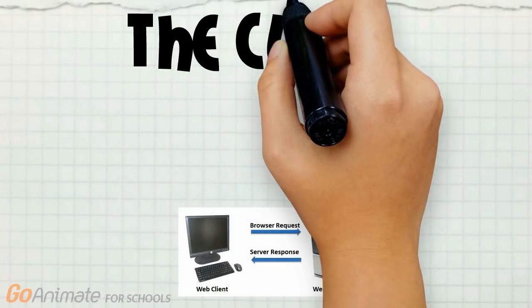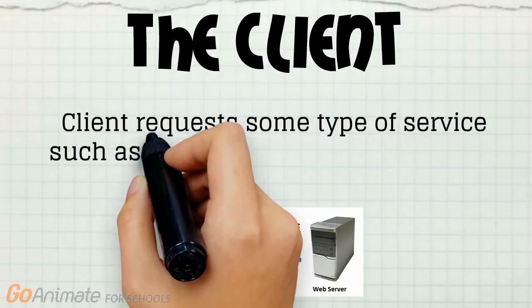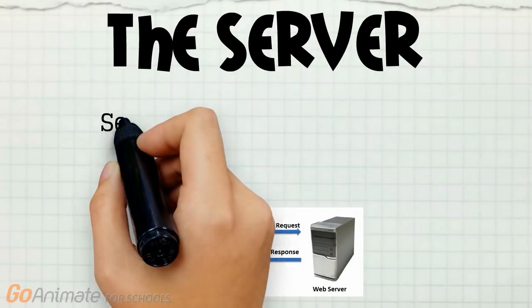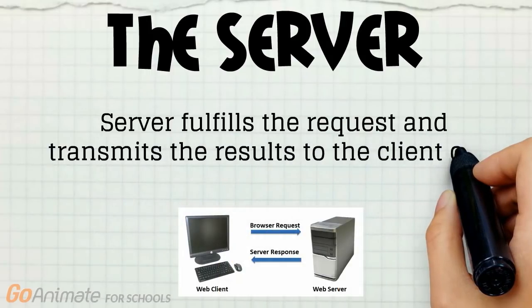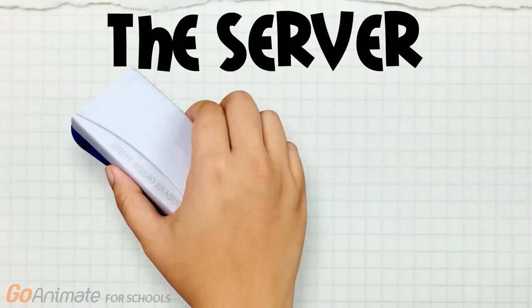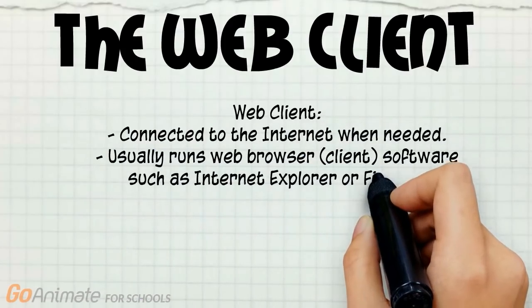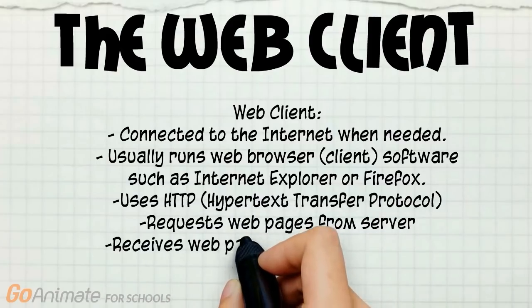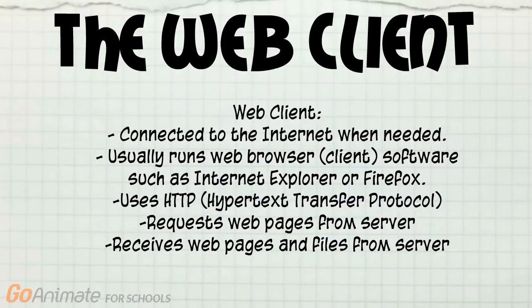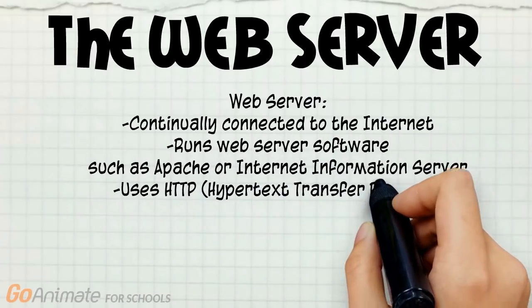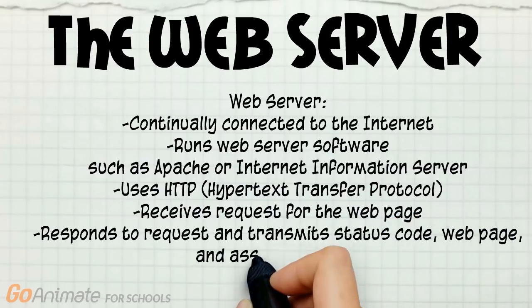The client requests some type of service, such as a file or database access, from the server. The server fulfills the request and transmits the results to the client over a network. The web client is connected to the internet, usually runs web browser client software such as Internet Explorer or Firefox, and uses HTTP — hypertext transfer protocol. The web server is continually connected to the internet, runs web server software such as Apache or Internet Information Server, and also uses HTTP.